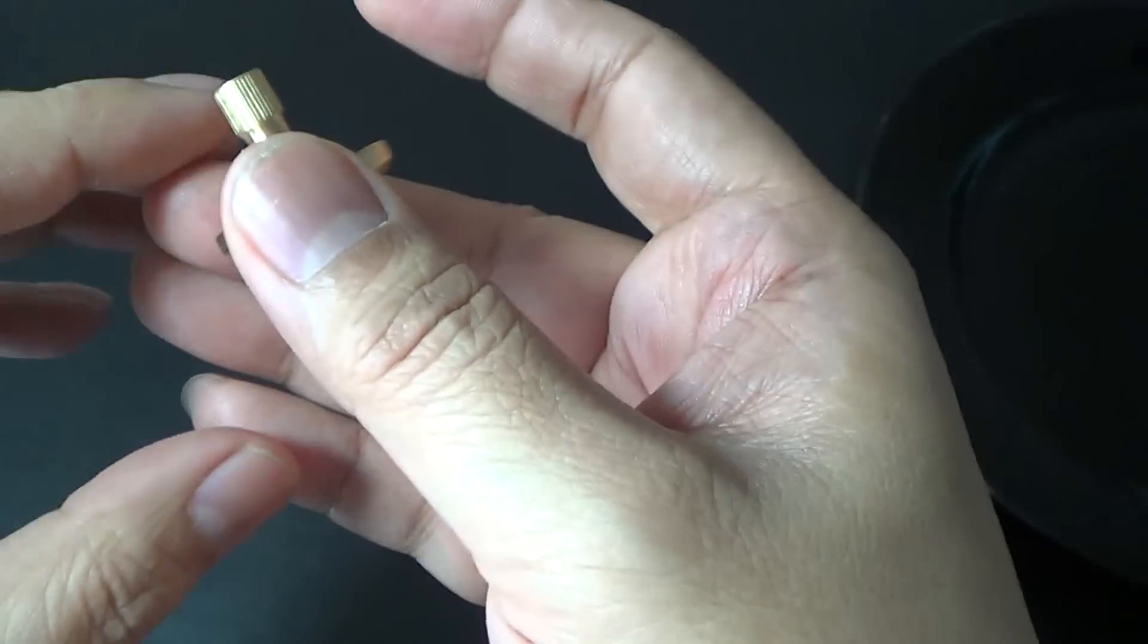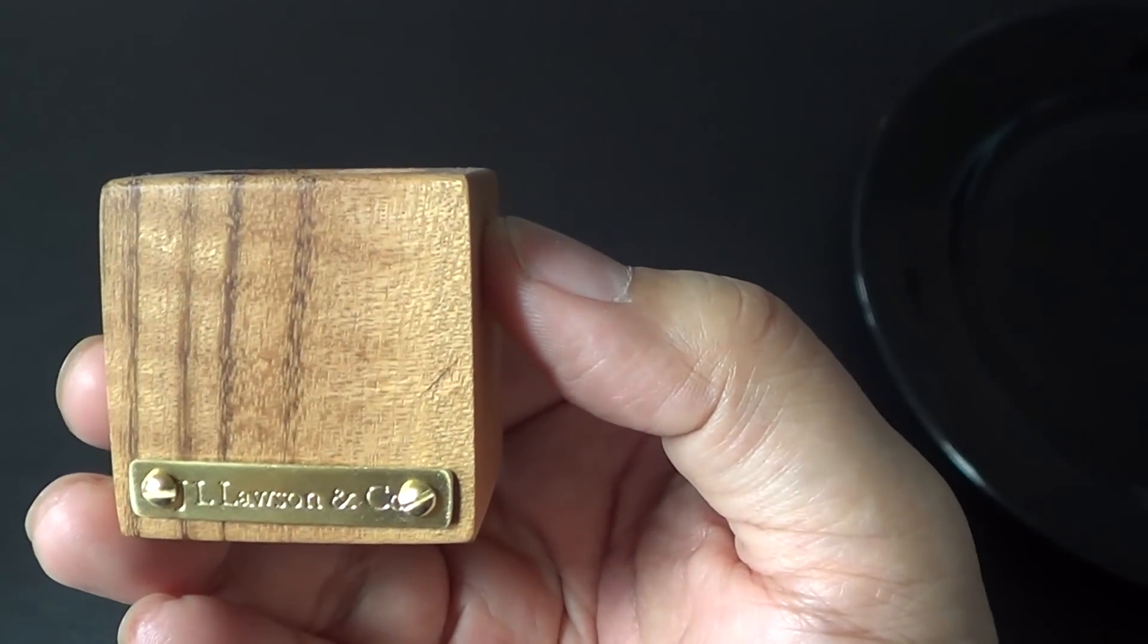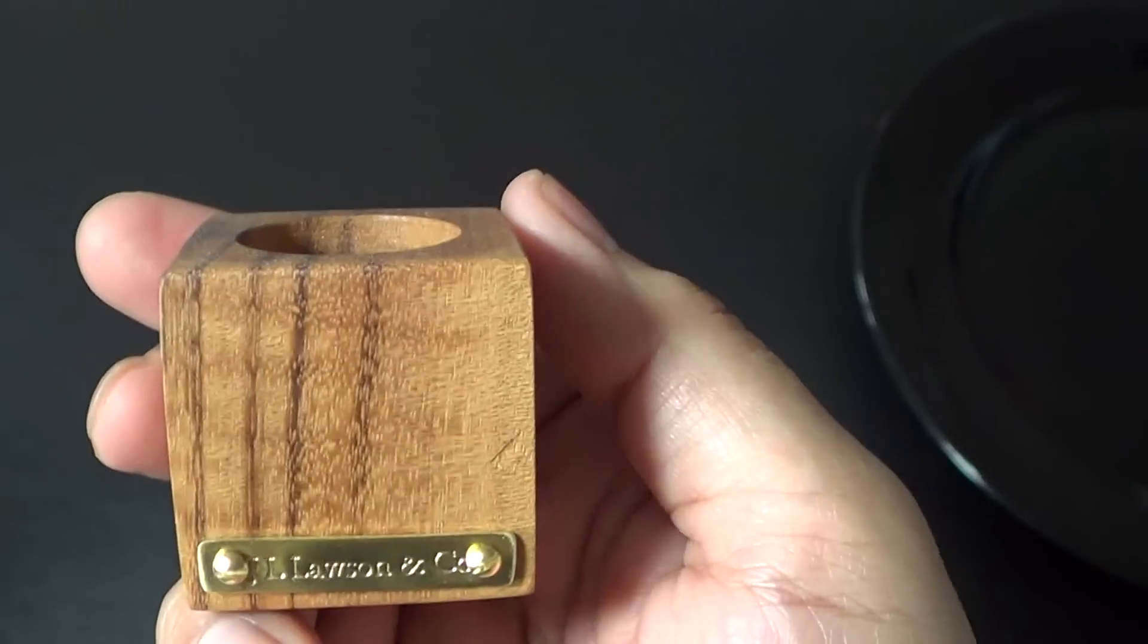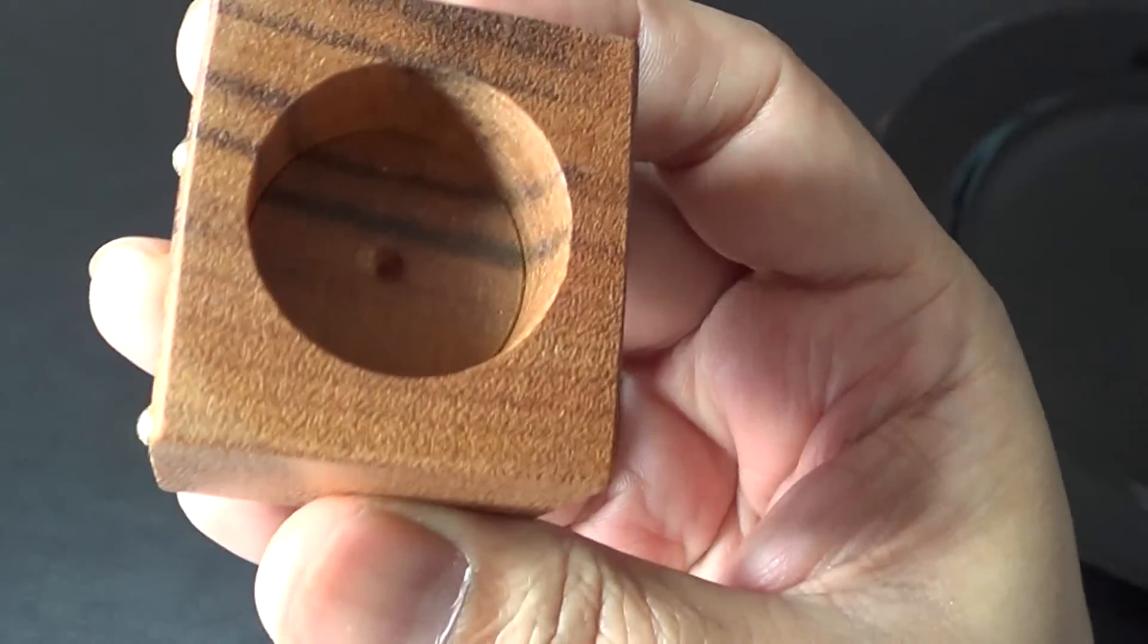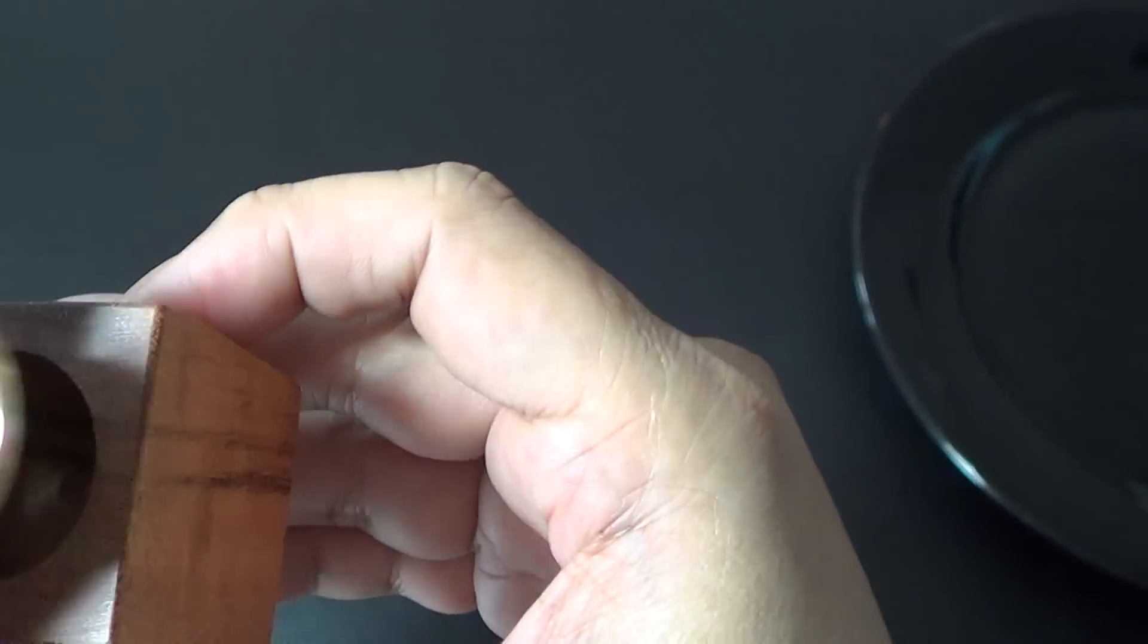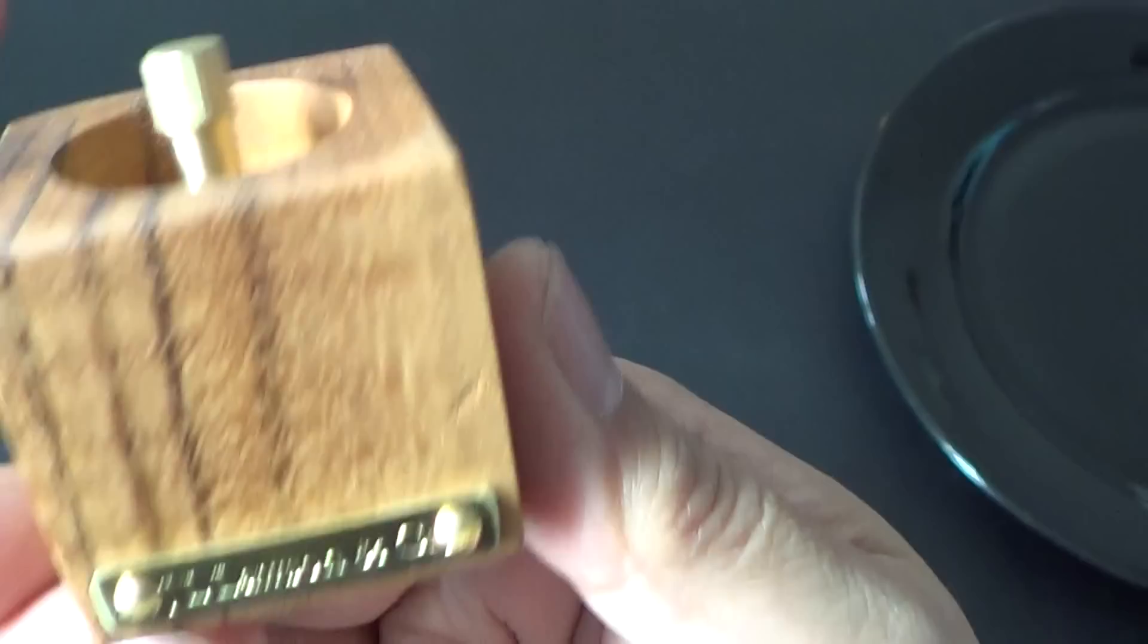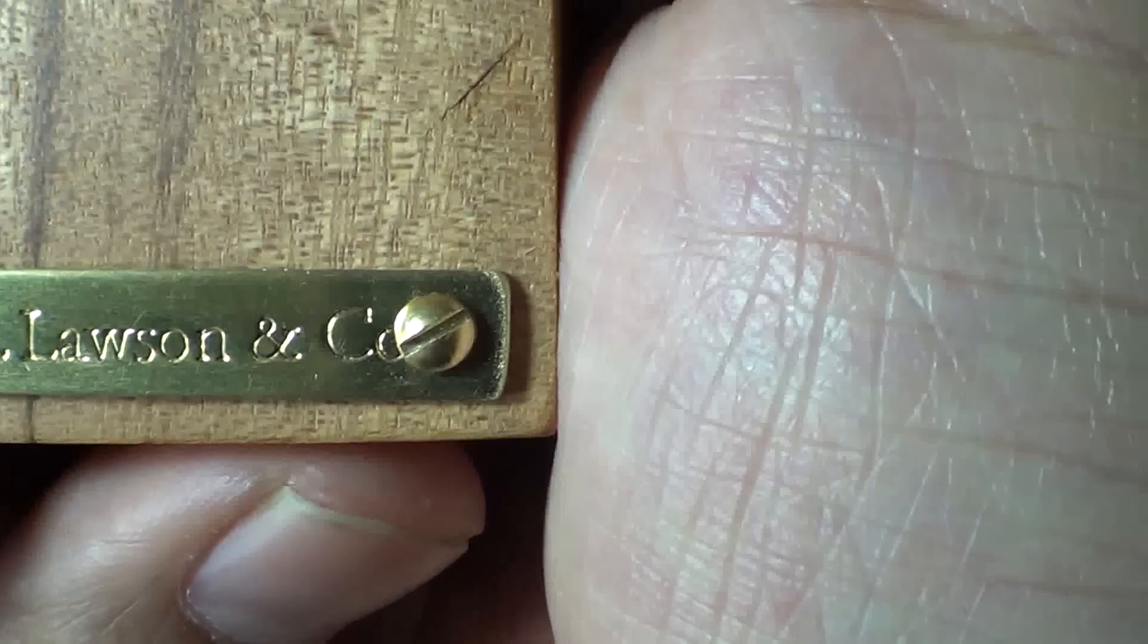It comes in a nice wood case. Goncalo Alves wood case, better known as zebra wood or tiger wood. So, you can see it's there to fit your top perfect. So, it'll sit nice on your desk. It's got the J.L. Lawson stamp on it.